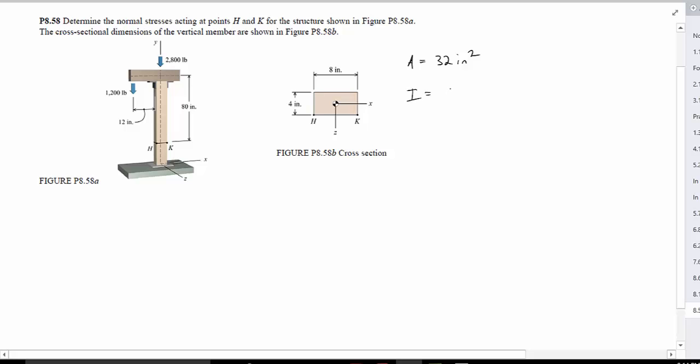Moment of inertia is going to be, I apologize, it's going to be bh cubed over 12 for a rectangle. So we'll call the base 4, the height 8, and over 12, that equals 170.67 inches to the fourth.